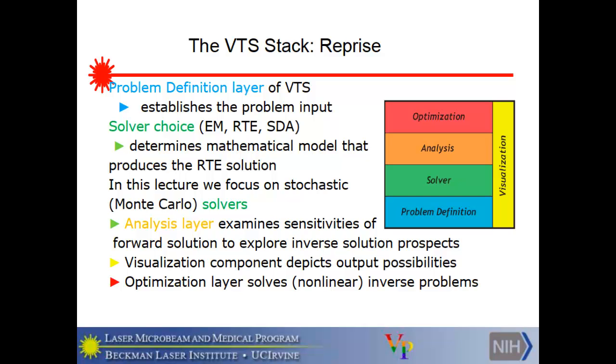The analysis layer, as Vassen hinted, I think, examines the sensitivities of forward solutions to explore inverse solution prospects. At least that's one function it performs. The sensitivities are the rates of change of the output with respect to the parameters whose sensitivity you're interested in. And we have a technique of solving inverse problems using Monte Carlo that is able actually to calculate these derivatives through an analytic formula based on the estimator. So that's a very powerful tool. Visualization is used all throughout the game to see what kind of output we're looking at. And finally, the optimization layer at the top solves the non-linear inverse problems. So it's something like a least squares fit.